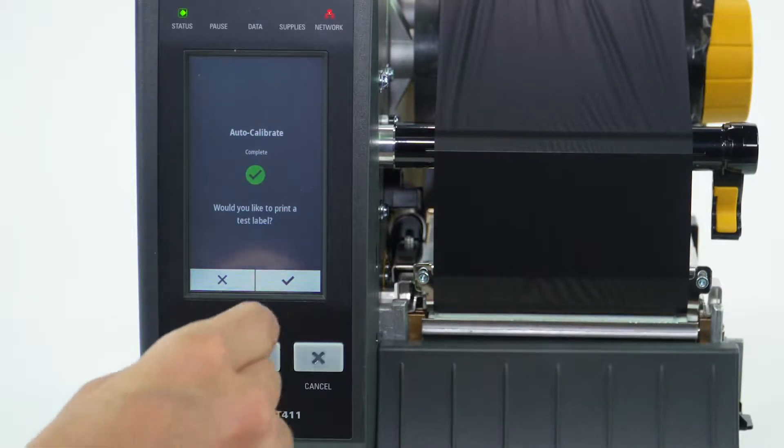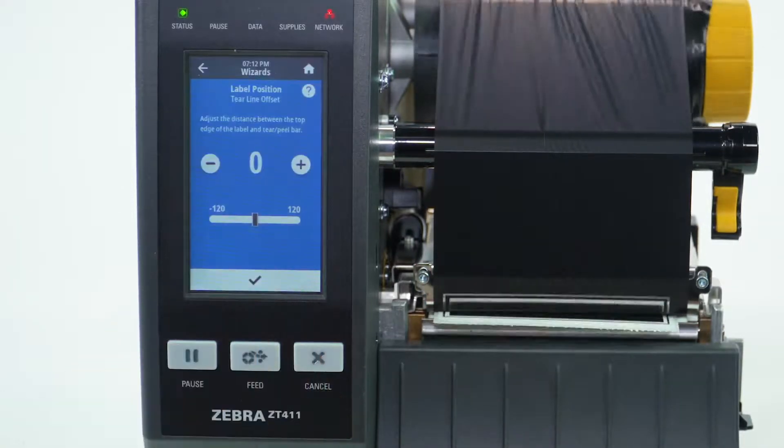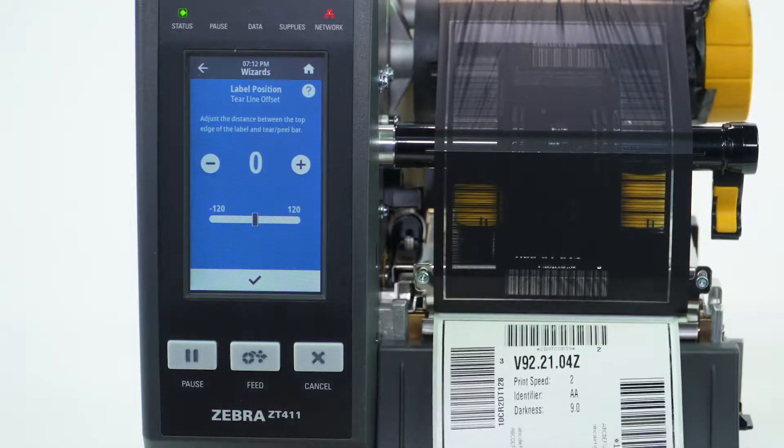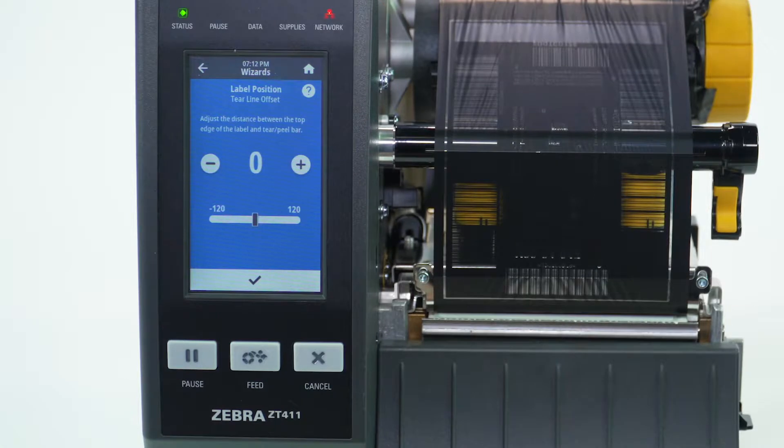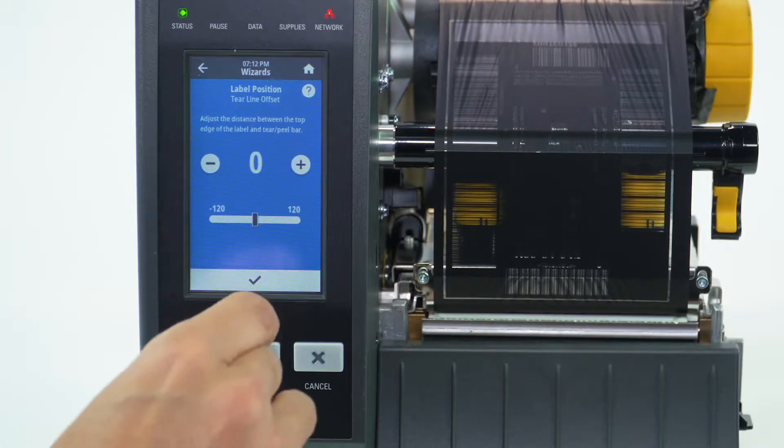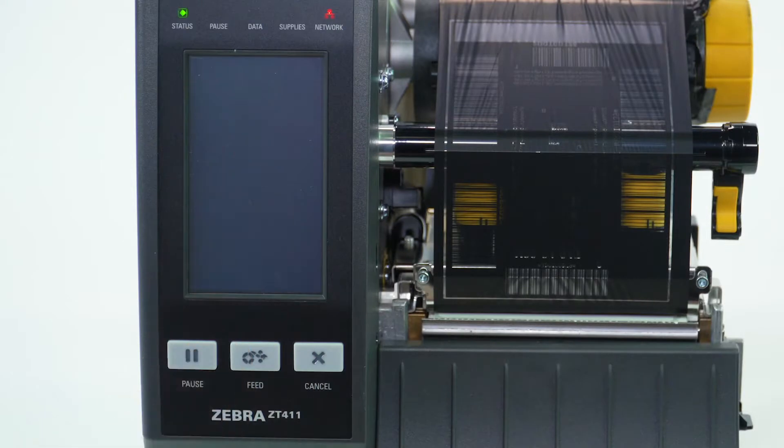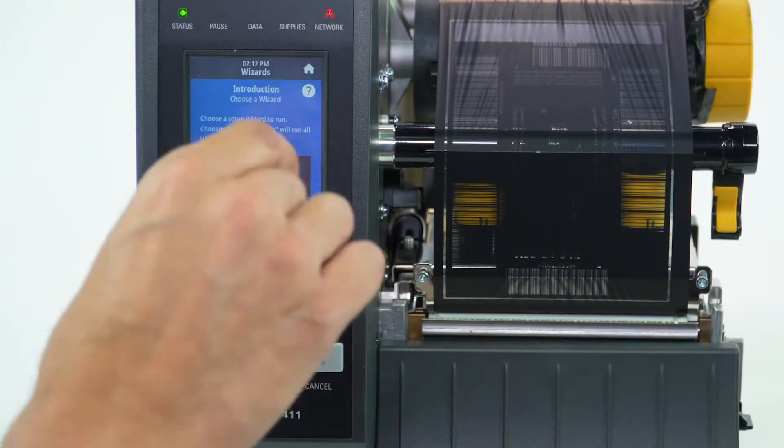Select Check to print test label. Select Check, then select Home twice to complete the process.